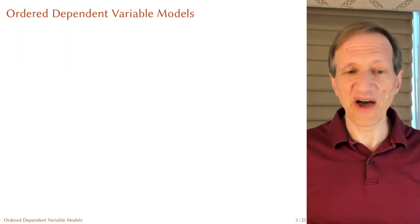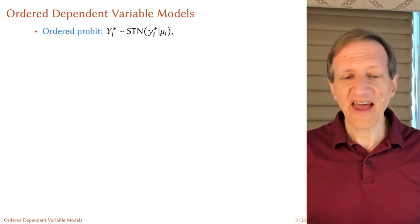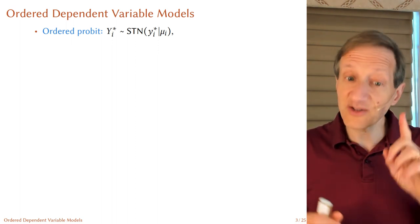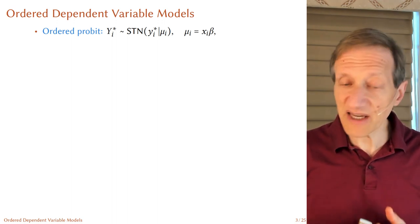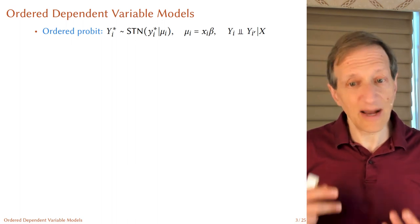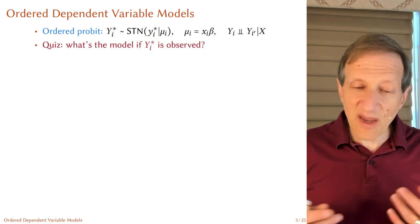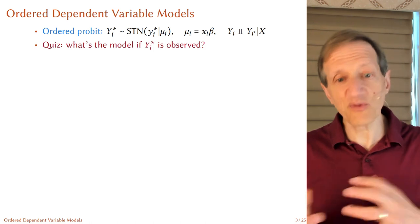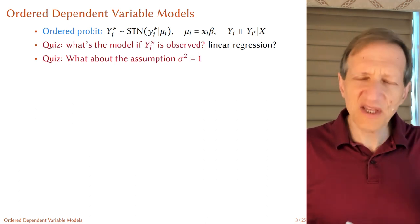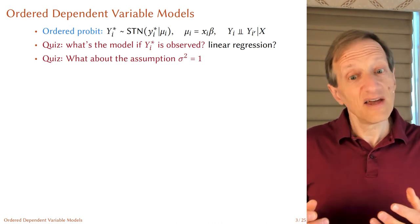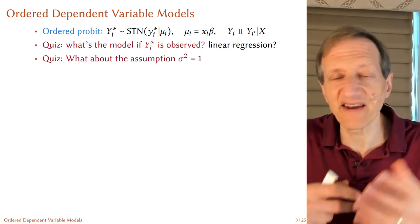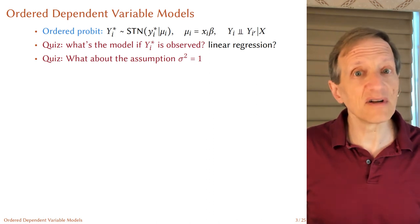Now we have ordered dependent variable models. Let's start with an ordered probit. An ordered probit has Y star distributed as a stylized normal distribution — that's a normal distribution with mean mu and variance 1. We have a systematic component which is linear: mu of i is equal to X sub beta. The last component is independence of observation i and observation i prime. Think about this: what's the model if Y star is observed? If we observe Y star, is it a linear regression? What about the assumption that sigma squared is 1? If we run a linear regression with sigma squared equal to 1, we're making an assumption that might be wrong — it's a little like a stopped clock. If it's right, it's right; if it's wrong, it's wrong.